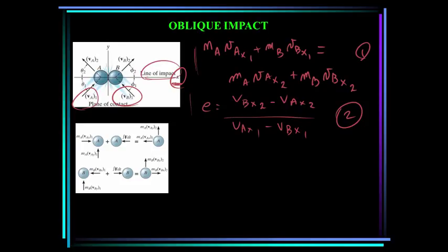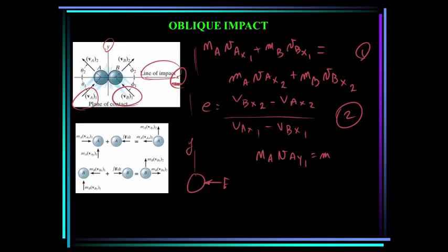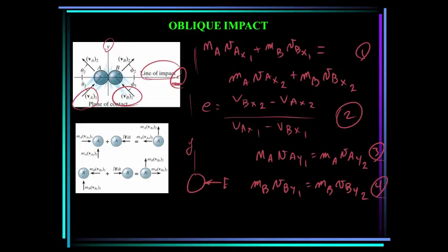In the y direction, for each particle, linear momentum is conserved because the impulsive force on the ball is in the x direction — there are no forces in the y direction. So the mass of A times its y-velocity before impact equals the mass of A times its y-velocity after impact. Likewise for ball B: the mass of B times its y-velocity before impact equals the mass of B times its y-velocity after impact. These provide the four equations needed to solve oblique impact problems.